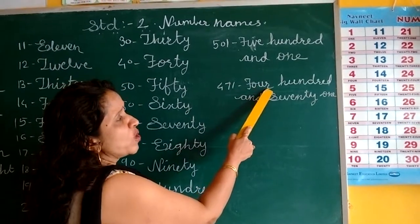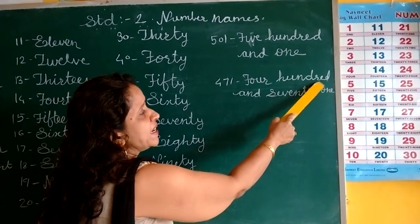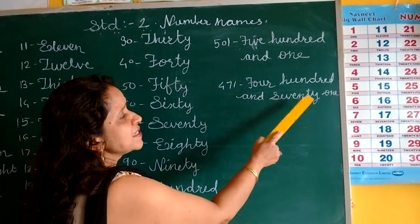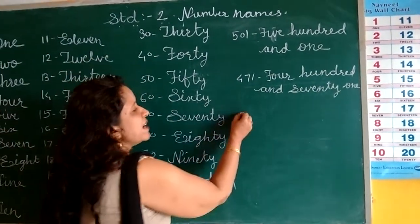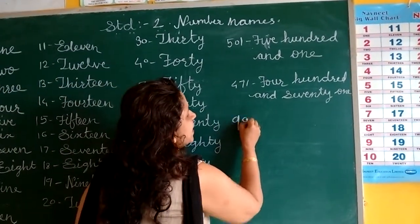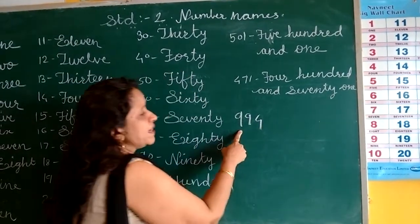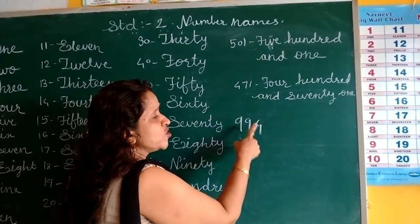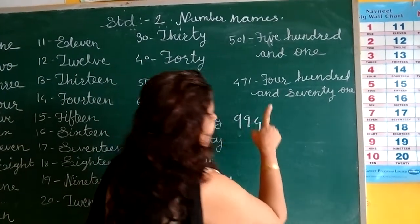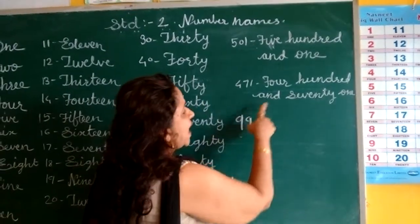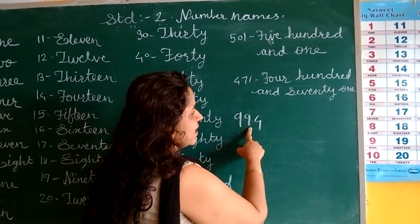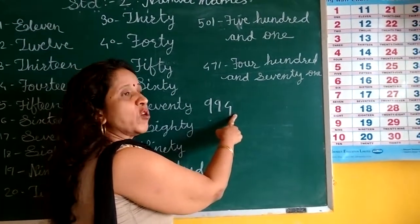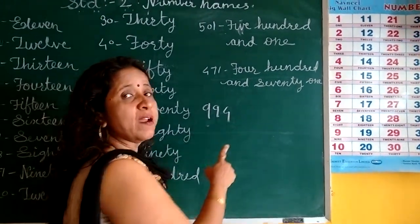This number is 471. F-O-U-R, 4. H-U-N-D-R-E-D. 400 and 71. For 994: N-I-N-E, 9. H-U-N-D-R-E-D. AND — A-N-D. N-I-N-E-T-Y, 90. F-O-U-R, 4. Nine hundred and ninety-four.